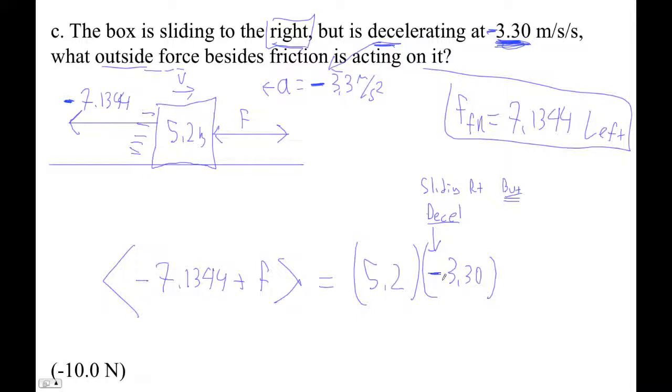To do this math, I'm going to go this times this, so 5.2 times negative 3.3, right? And then I'm going to add this to both sides. I'm just literally on the same line, I'm going to go plus 7.1344, and I'm getting F.